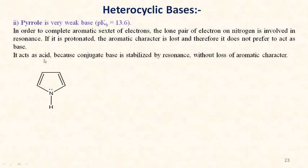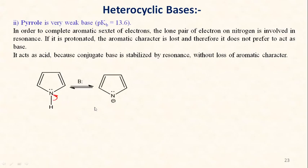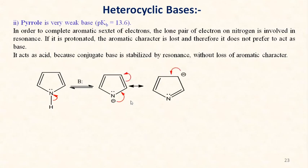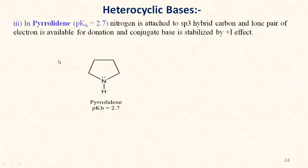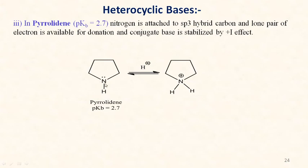Rather than acting as a base, when pyrrole acts as an acid by donating a proton, the aromatic character is retained and the negative charge on nitrogen in the conjugate base is stabilized by resonance without losing aromatic character. Pyrrolidine, which is aliphatic in nature, is a stronger base with pKb value 2.7. Its sp³-hybridized carbon atoms increase electron density on nitrogen and the conjugate acid is well stabilized by the electron-donating inductive effect.